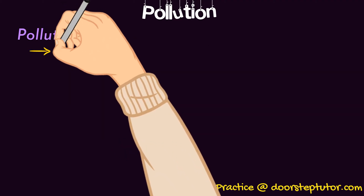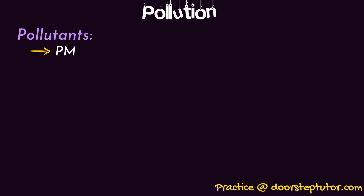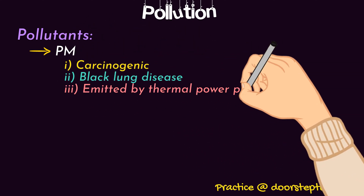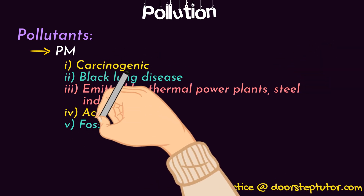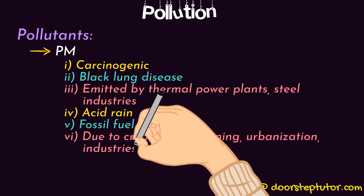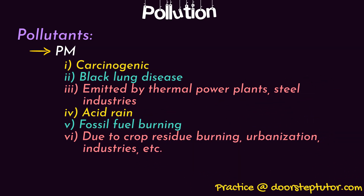The first is PM, or particulate matter, which is carcinogenic in nature, meaning it can cause cancer. Some other diseases include black lung disease. PM is generally emitted by thermal power plants and steel industries and is the biggest contributor of air pollution. It can result in acid rain, and also occurs due to fossil fuel burning, crop residue burning, urbanization, and industries.